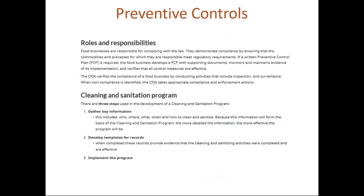The next section of the preventive controls cleaning and sanitation program description talks about the roles and responsibilities and the three steps used in the development of a cleaning and sanitation program: gather information, develop templates for records, and implement the program.